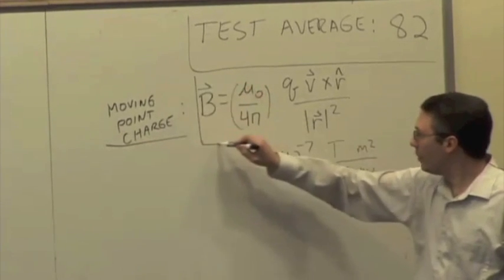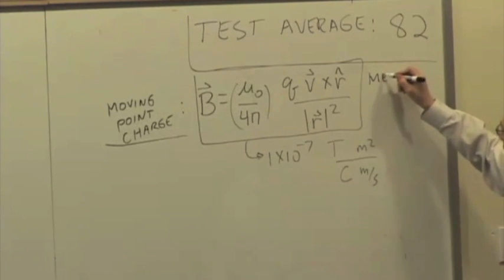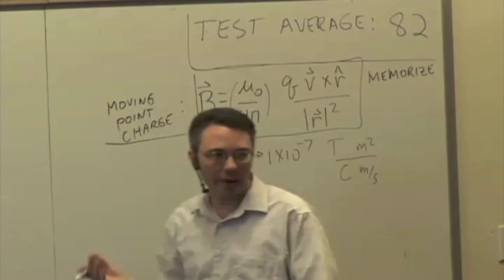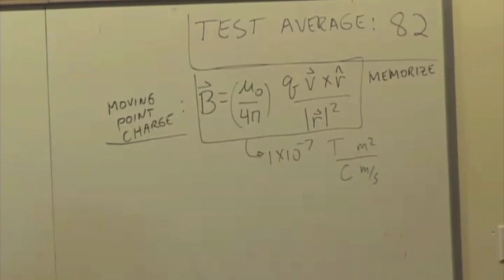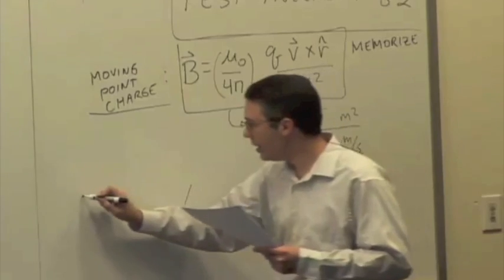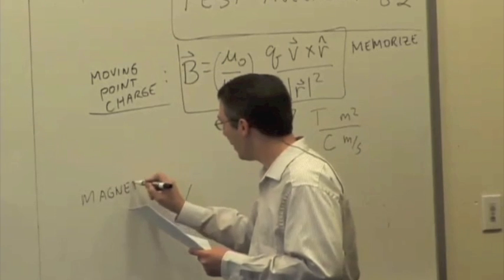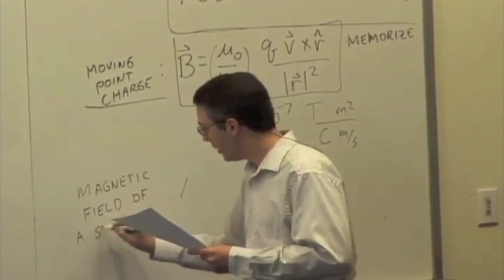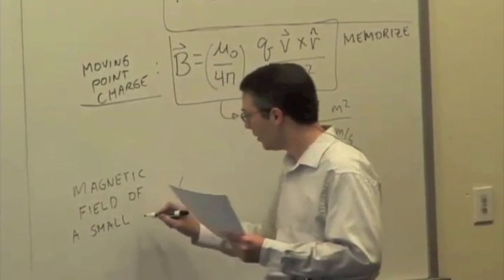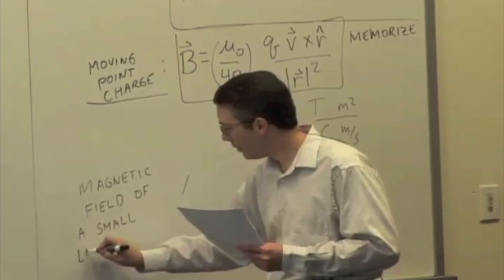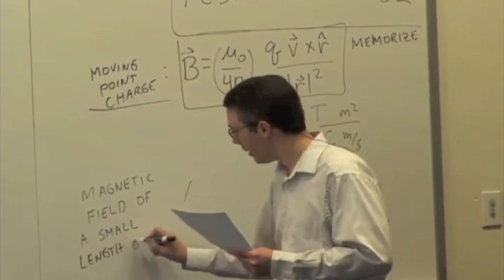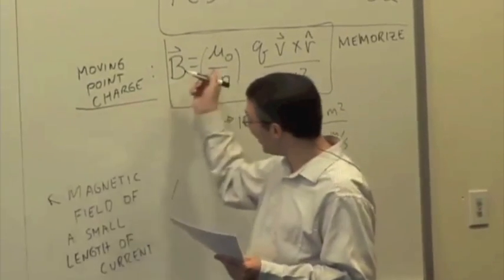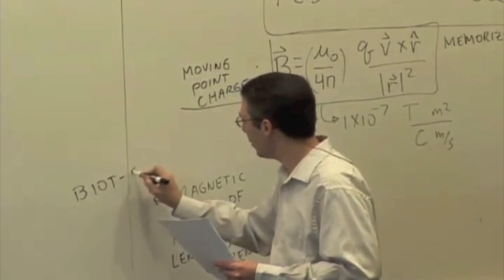This is a formula that you ought to just memorize, much like the electric field of a point charge was so fundamental that we use it so often that you just memorize it. Same with the magnetic field of a moving point charge. Now the magnetic field of a small length of current — put it that way — is sometimes called the Biot-Savart law. These are really different versions of the same law.